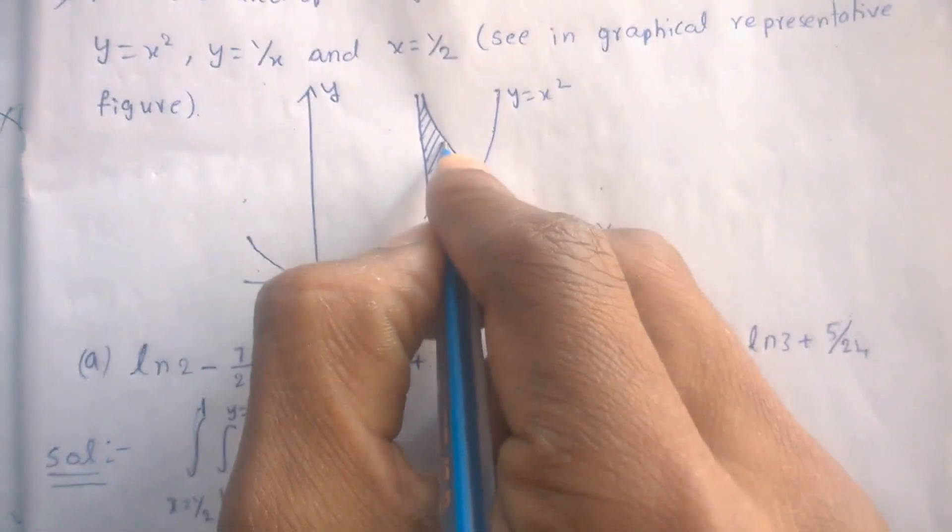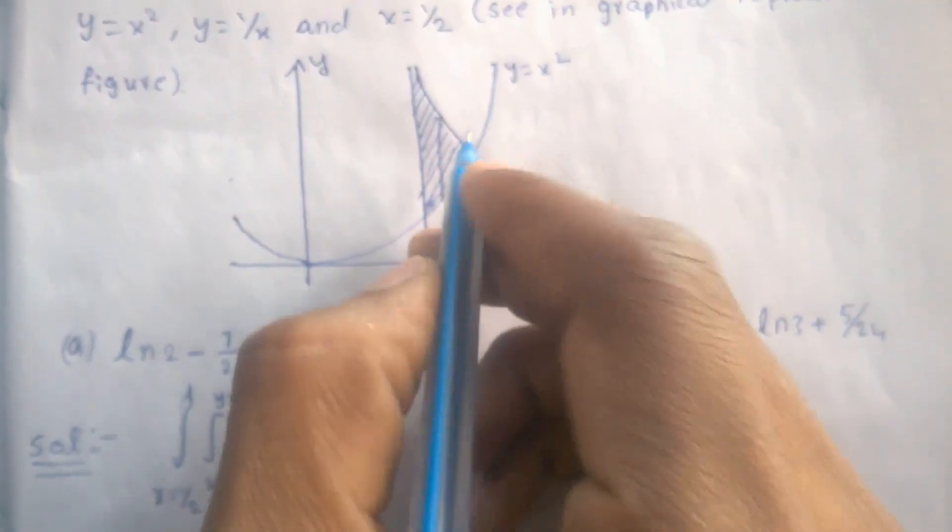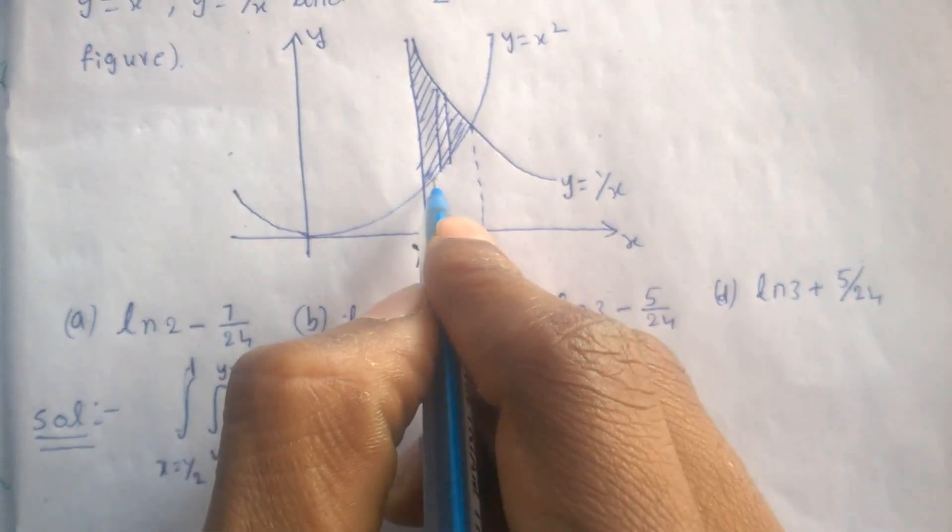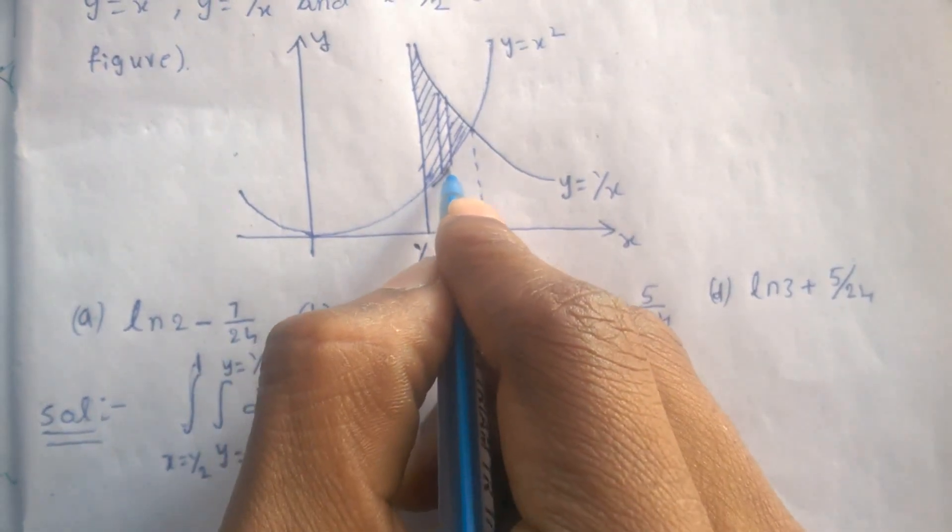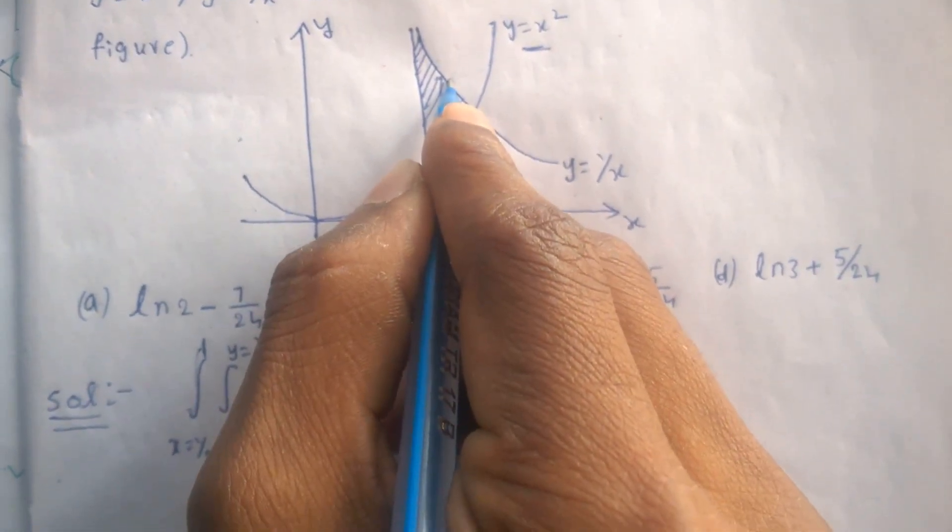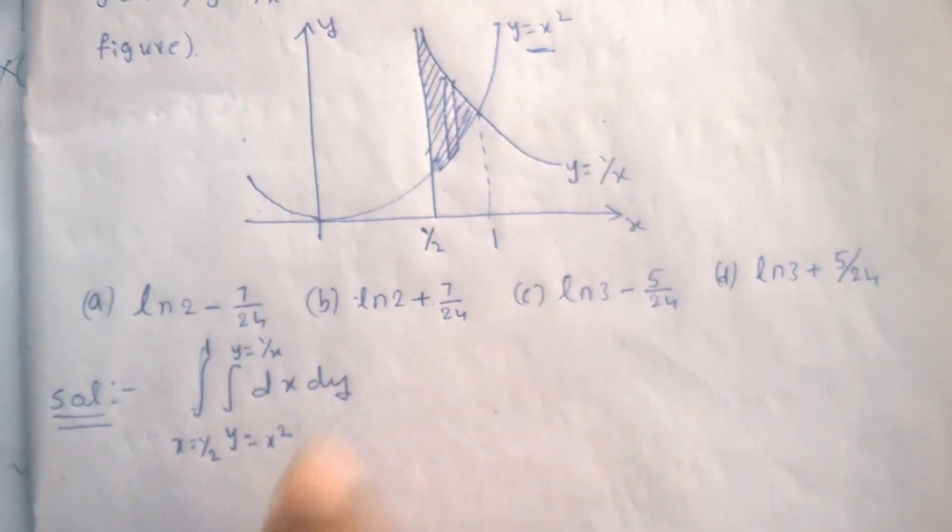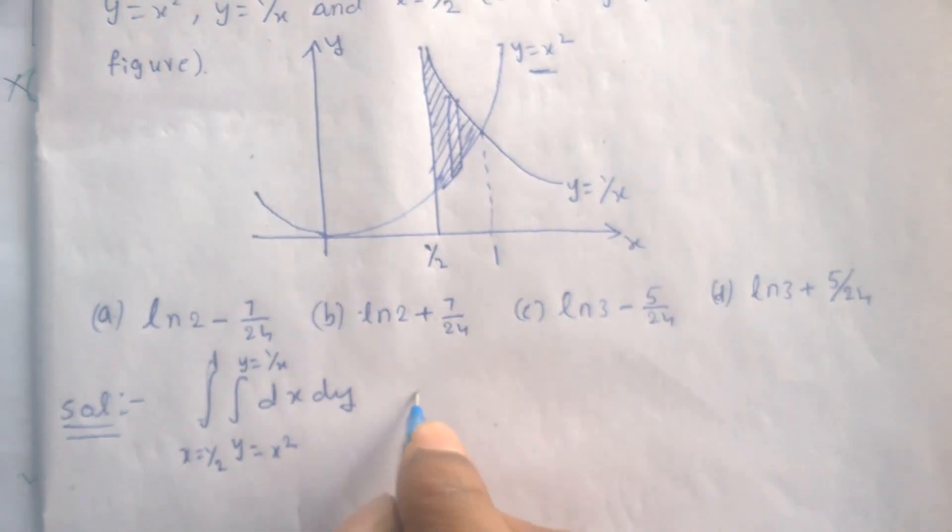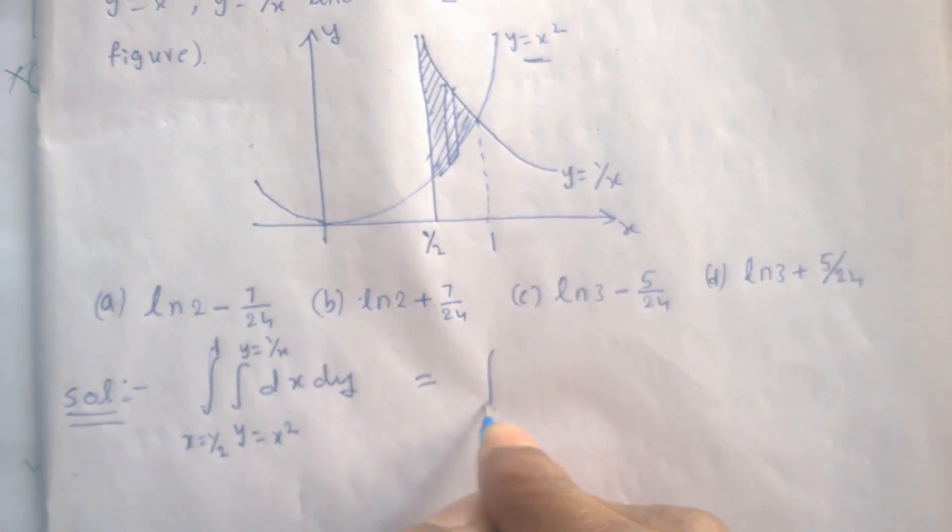Now how this came, we can obtain from this using vertical strip method. Here is the y limit starting from y equals x square and here is the upper limit y equals 1 by x.